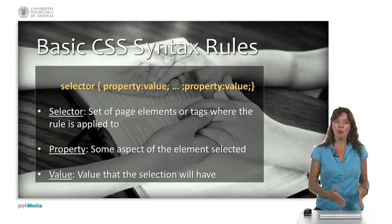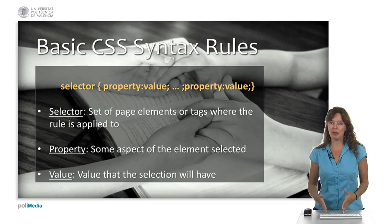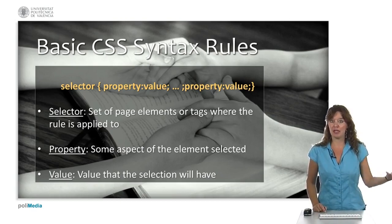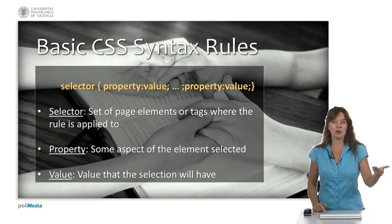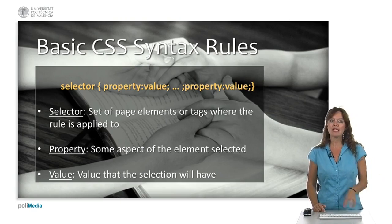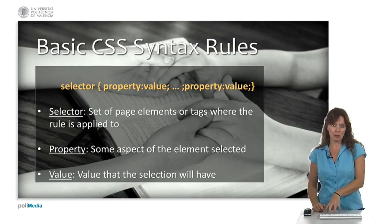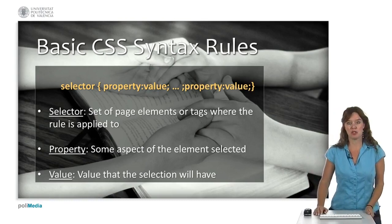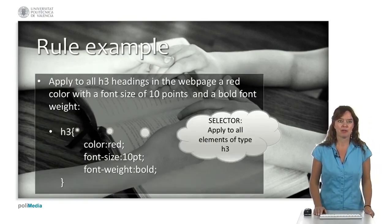It then adds property-value pairs, with properties indicating some aspect of the element to be styled — its color, its font, or whatever — and a value that we want to give that specific property. Let's look at a couple of examples of selectors.